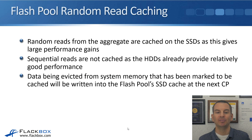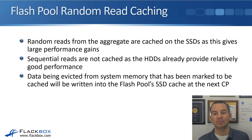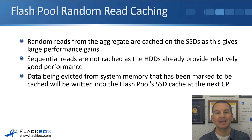FlashPool random read caching: random reads from the aggregate are cached on the SSDs, as this gives large performance gains. Sequential reads are not cached, as the HDDs already provide relatively good performance. Data being evicted from system memory that has been marked to be cached will be written into the FlashPool's SSD cache at the next consistency point, rather than going to the spinning disks.